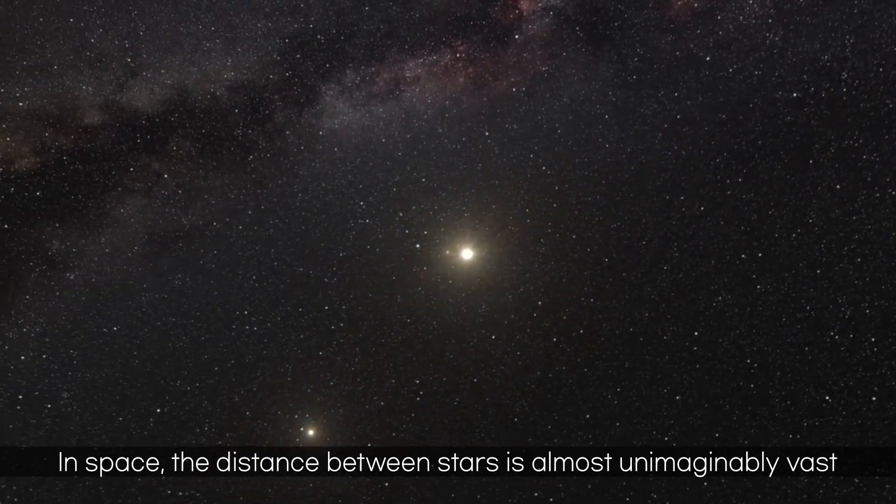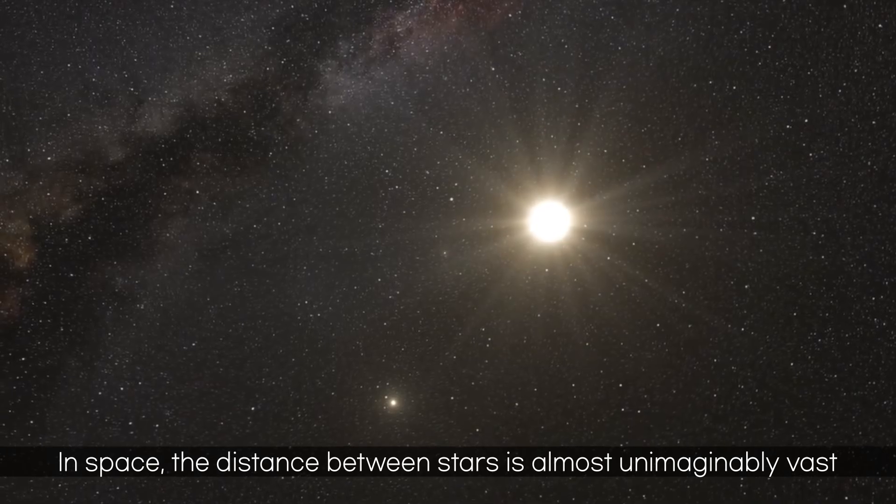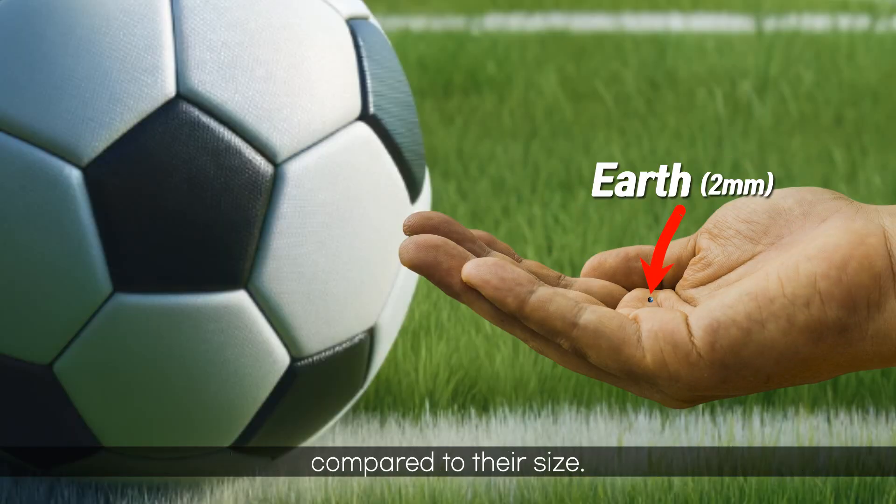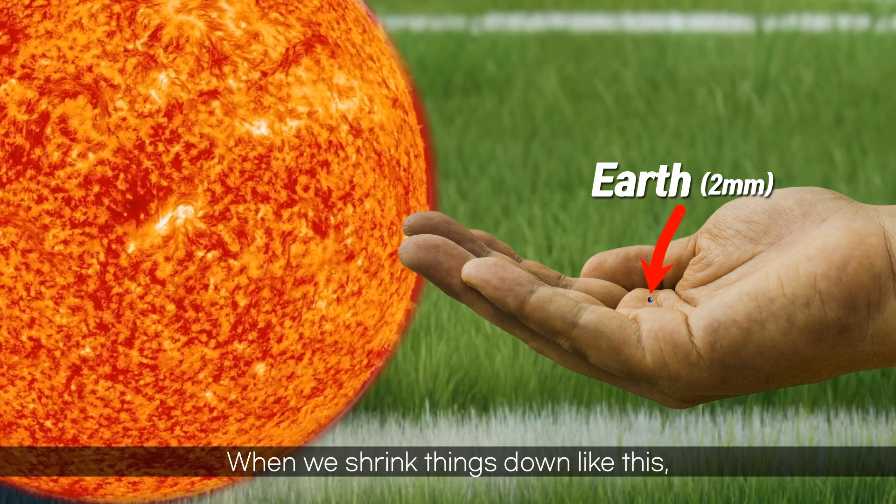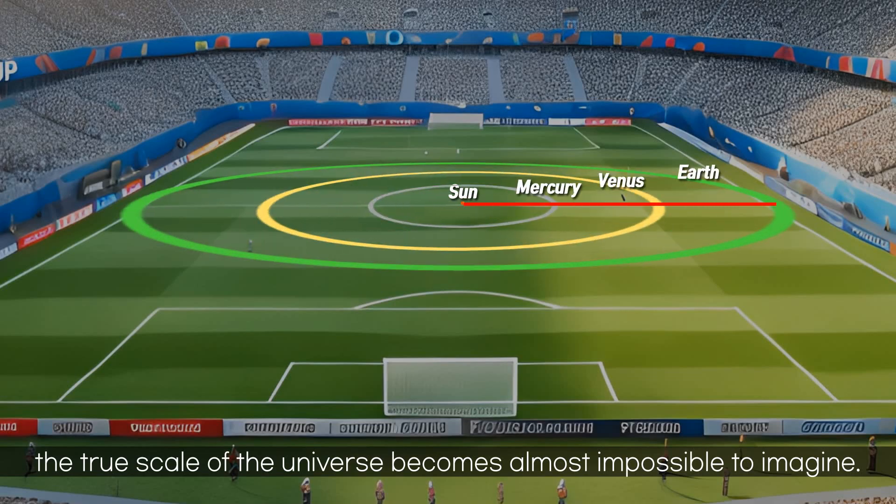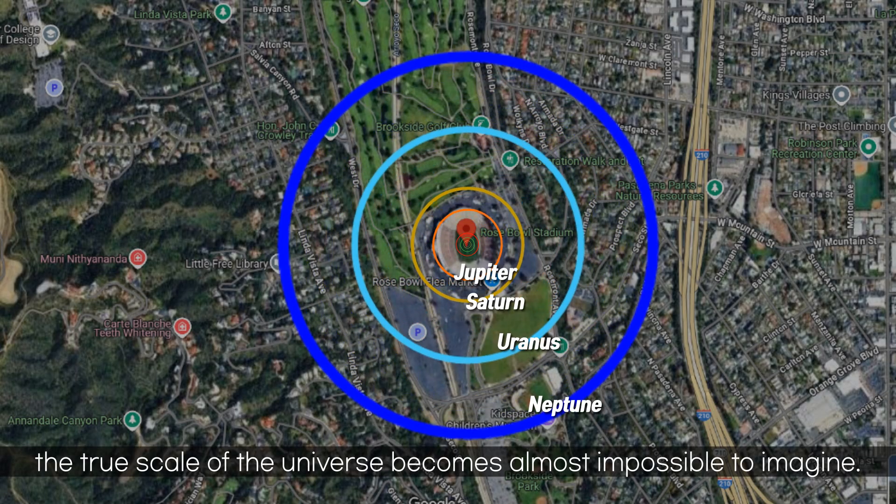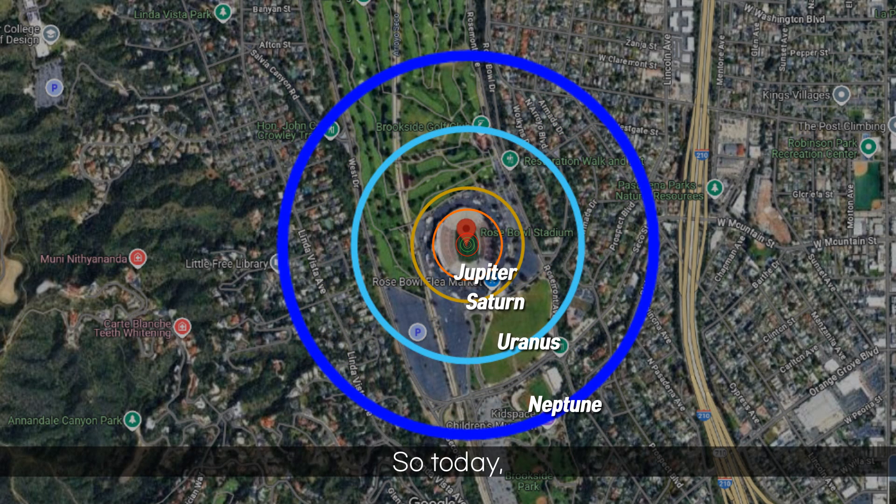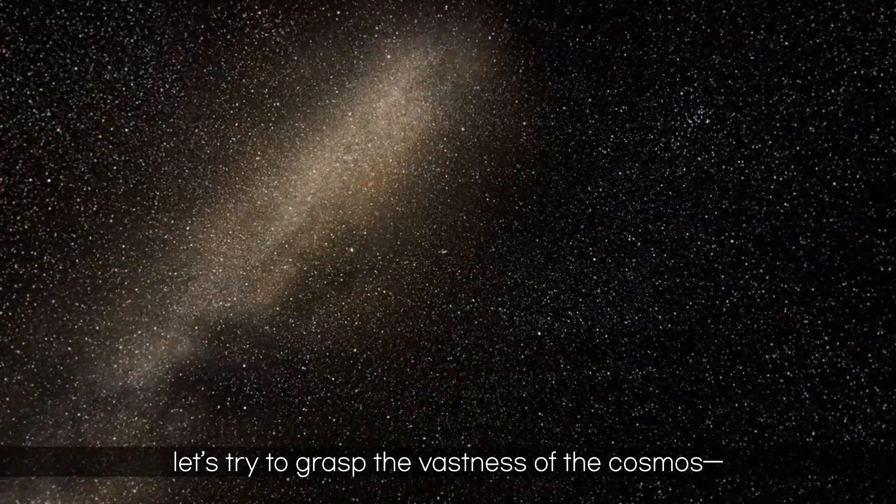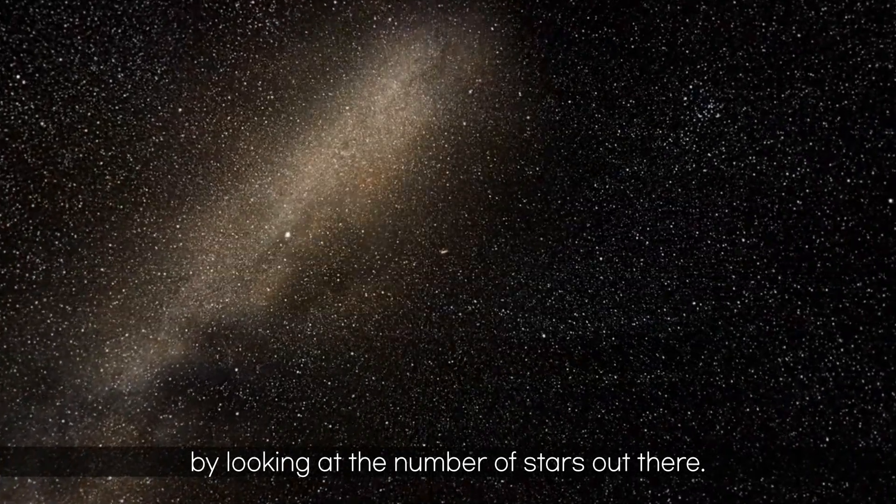In space, the distance between stars is almost unimaginably vast compared to their size. When we shrink things down like this, the true scale of the universe becomes almost impossible to imagine. So today, let's try to grasp the vastness of the cosmos by looking at the number of stars out there.